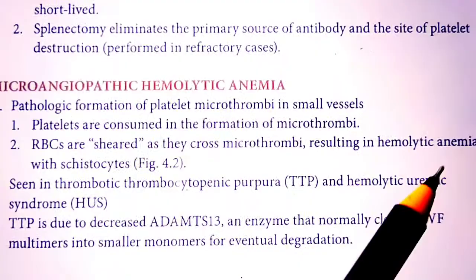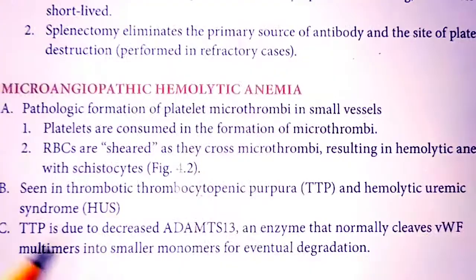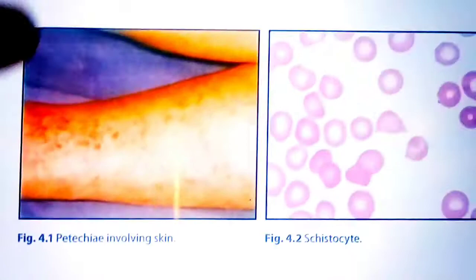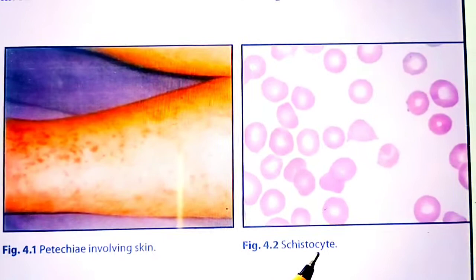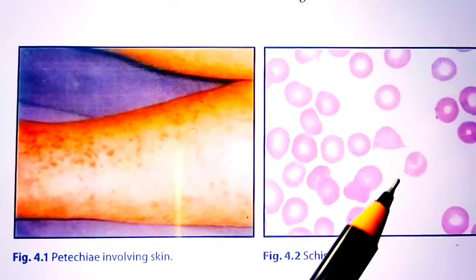The shearing and destruction of RBCs results in hemolytic anemia. These disfigured, sheared RBCs are called schistocytes. You can also see petechiae involving the skin in this condition.